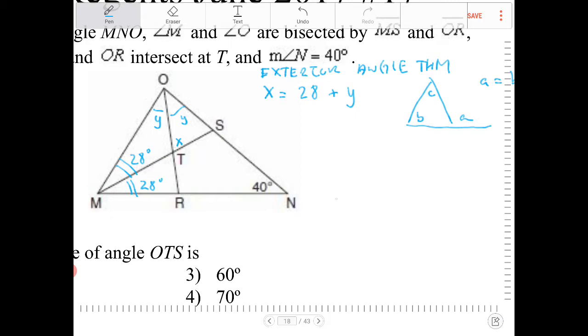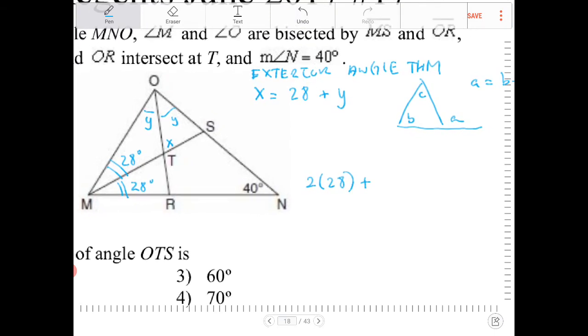So I have angle M, the overall angle M is going to be 56, so 28 times 2. So it's 2 times 28 plus the overall angle O, that's 2Y, plus angle 40. This should equal 180.